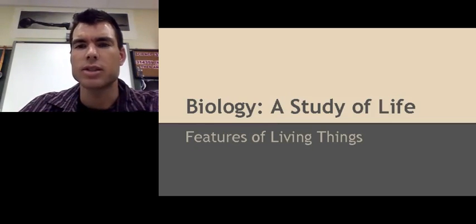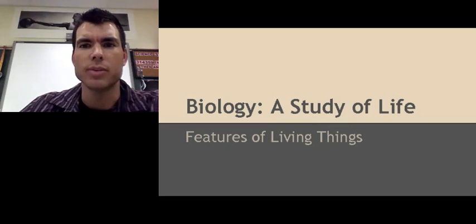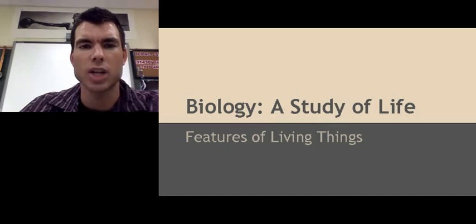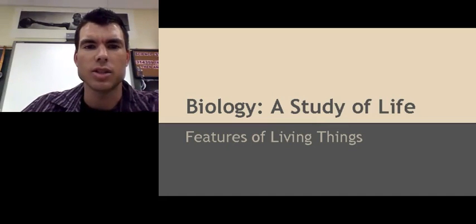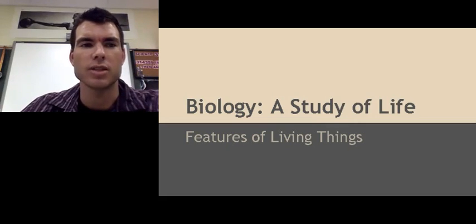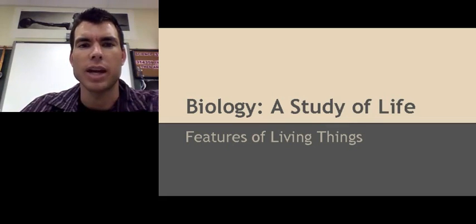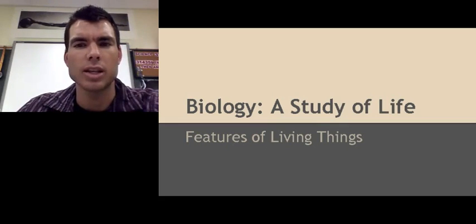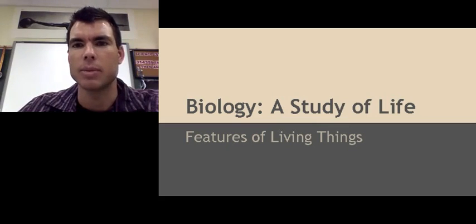In our previous lessons, we learned about the discovery of the cell by a man named Robert Hooke. He took cork and put it under a microscope and saw little chambers that he called cells, which is where the term comes from — it reminded him of the cells that monks lived in. Later on, there was a man by the name of Anton von Leeuwenhoek, and he looked at pond water under his microscope and saw little things moving around, which he called animalcules because he didn't know what else to name them.